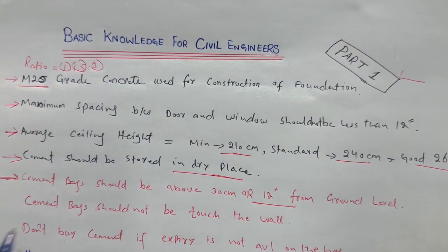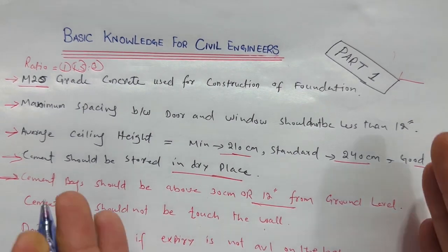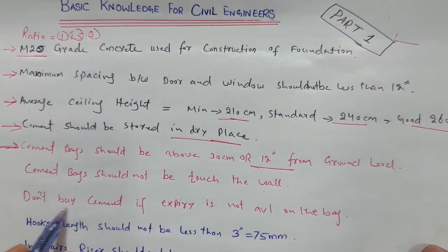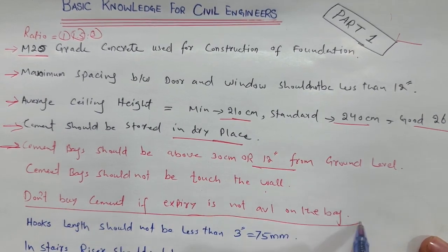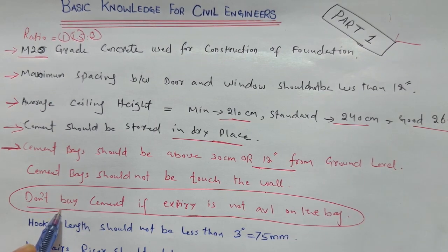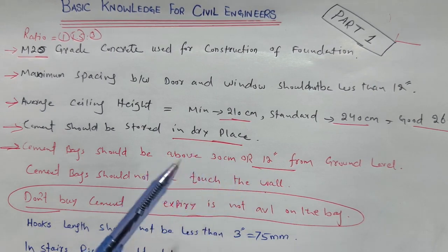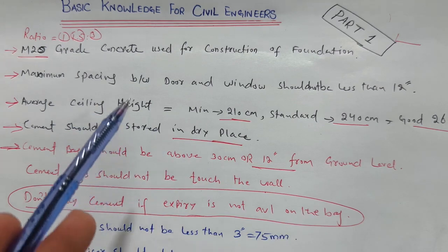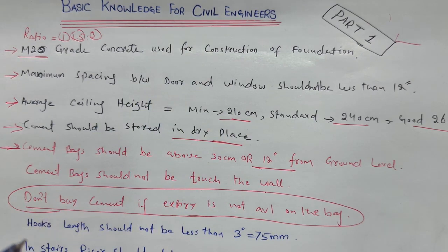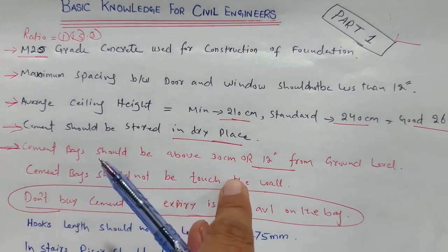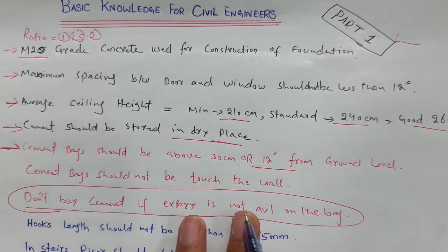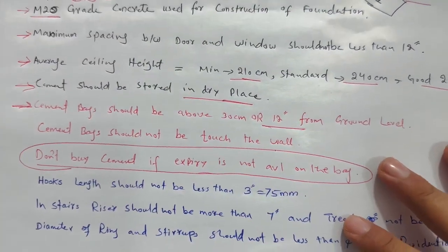Cement bags should not touch the wall — if they touch the wall, that is not good for the cement. Also, do not buy cement if the expiry date is not available on the bag, because that means it may already be expired. Cement can be used up to 90 days or three months. If you are using cement that is more than three months old, it is expired and cannot give you full strength. The expiry should be printed on the bag so you know when it expires.